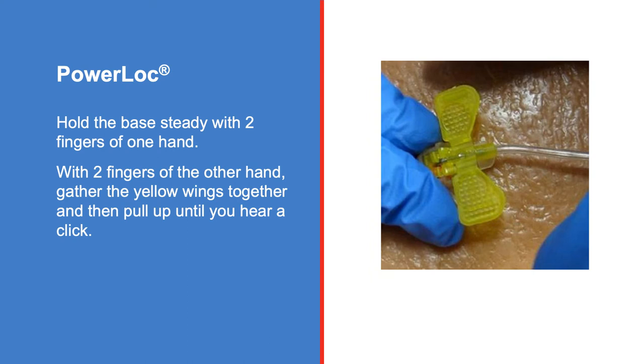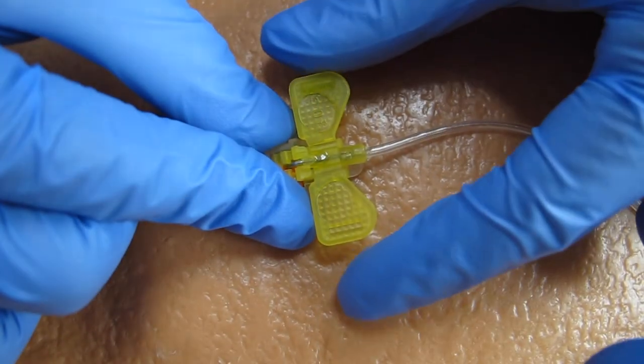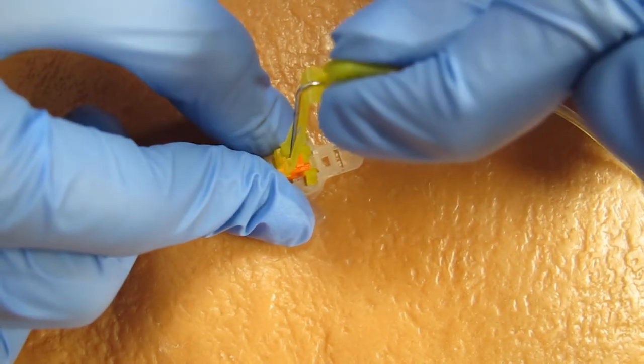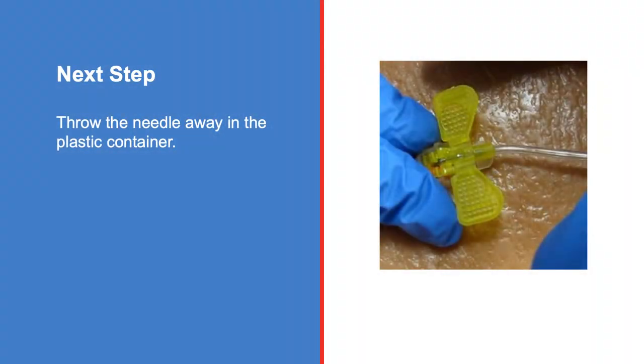A power lock is similar. You hold the base steady with two fingers of one hand. With two fingers of the other hand, gather the yellow wings together and then pull up until you hear a click. Again, you will throw the needle away in the plastic container.